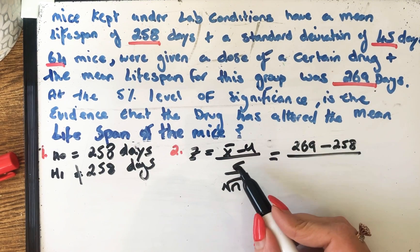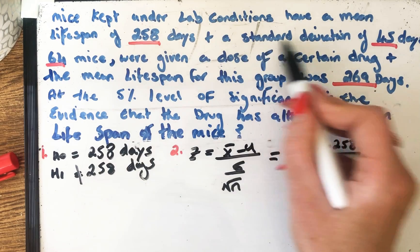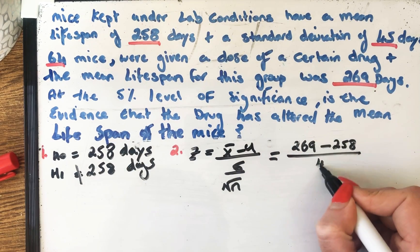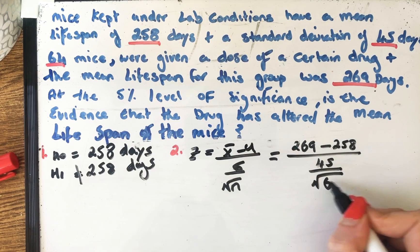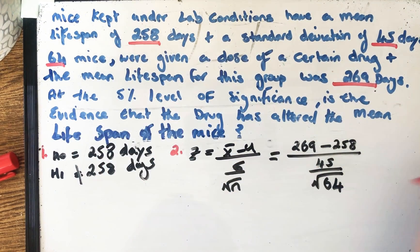All over sigma, which is our standard deviation. So let's find that in the question. Here we go. 45 all over our root N. And of course, we have 64 mice, which was over here.